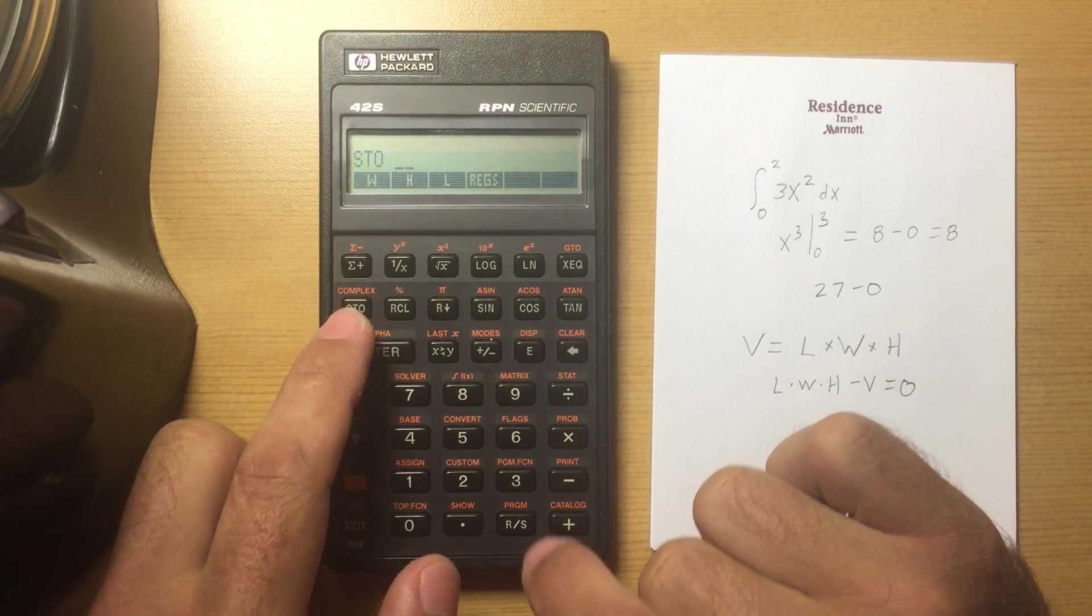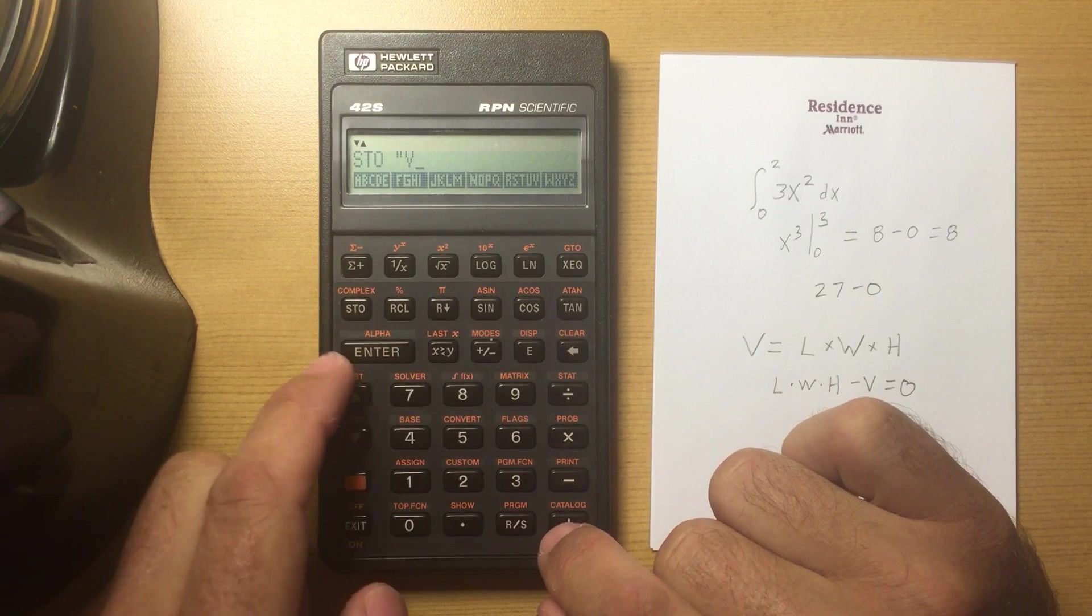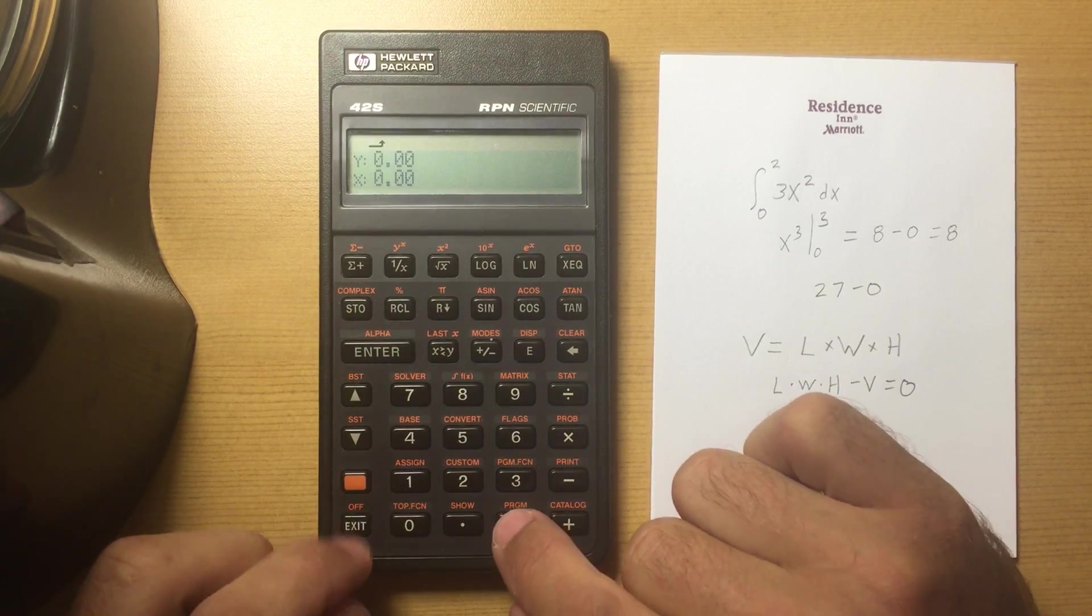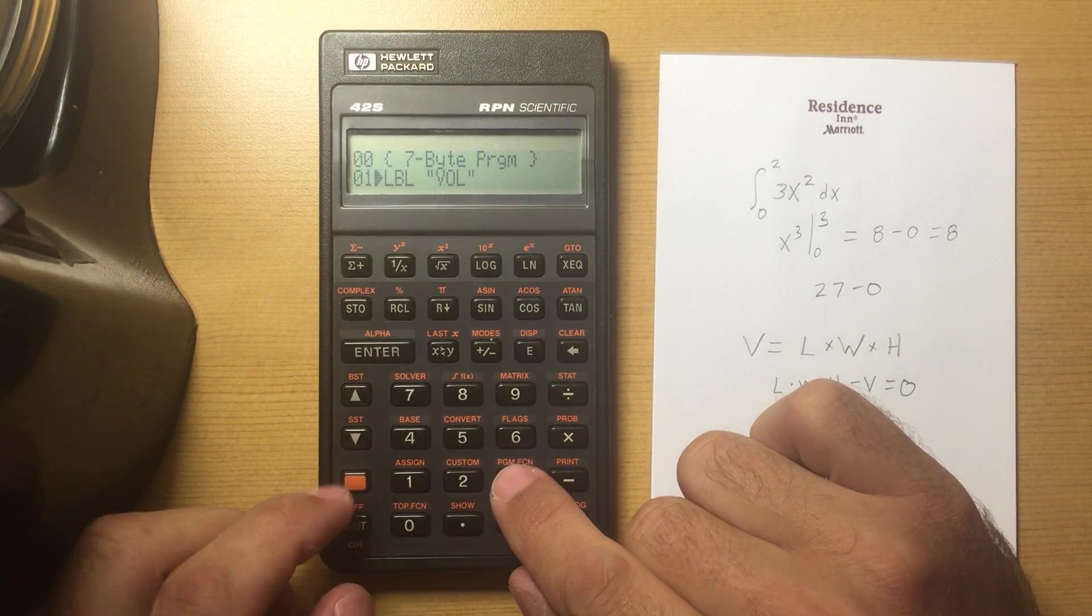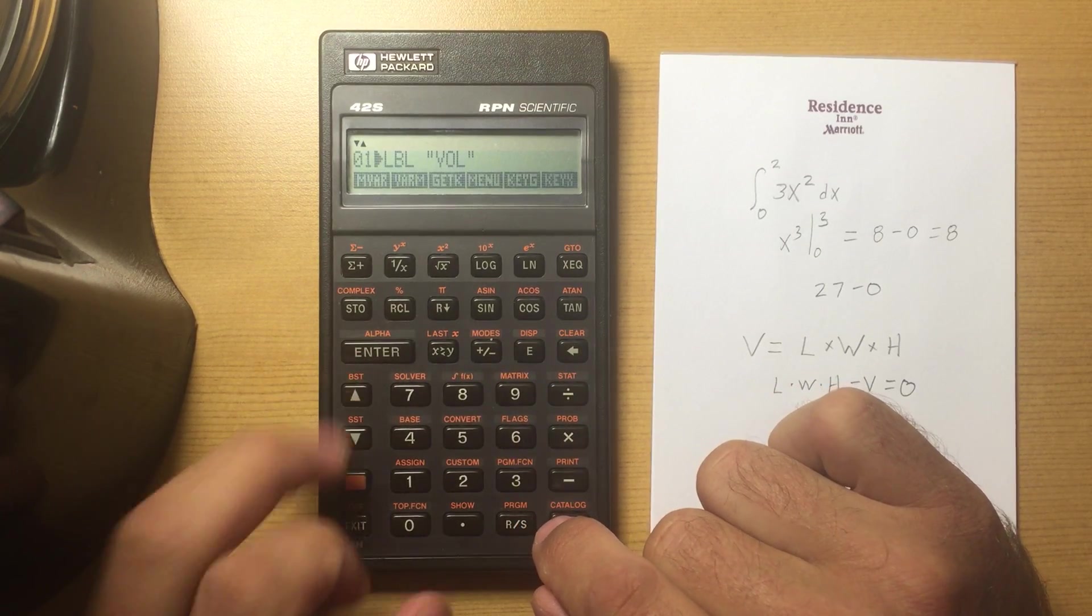and store zero into V. I go back to my program again, lock the program function, go up a menu,